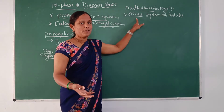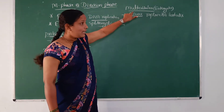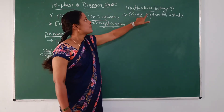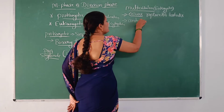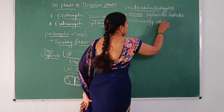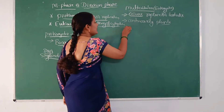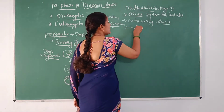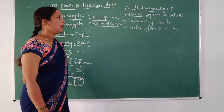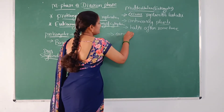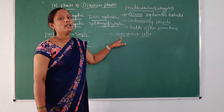In some unicellular eukaryotes, cell division is also a means of reproduction. But majorly in multicellular organisms, division occurs to replace lost cells. Division occurs continuously in the case of meristematic cells in plants, which continue till the plant dies. Whereas in animals, division will halt after some age — the division of cells will stop.